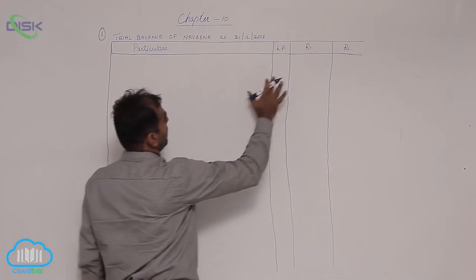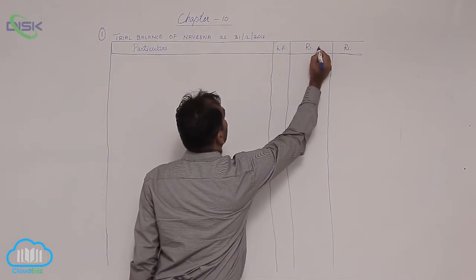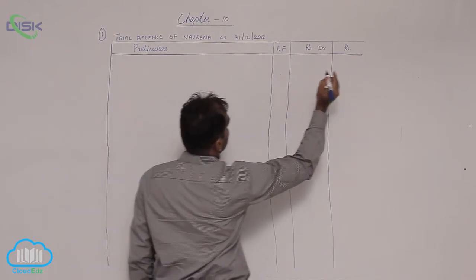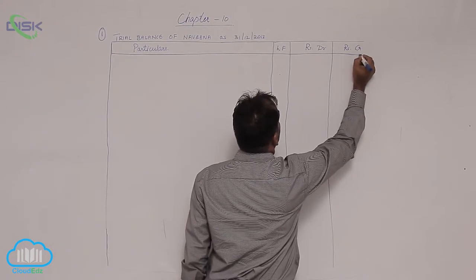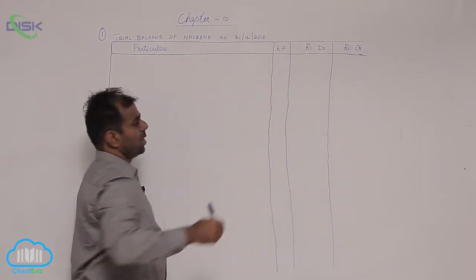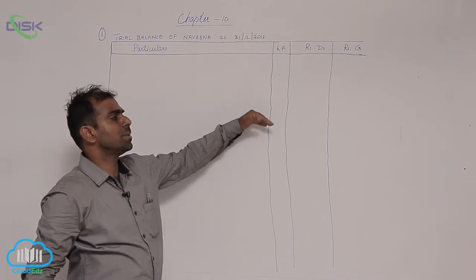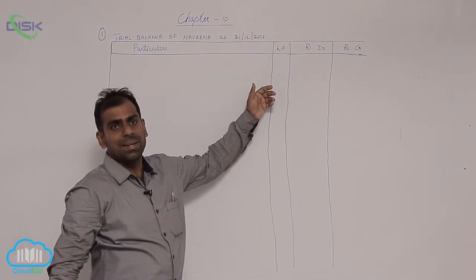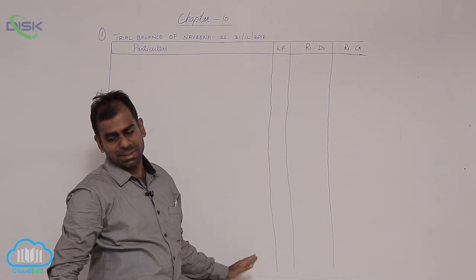So we have particulars, we have LF, and we have a column for debit balances and we have an amount column for credit balances. Although this LF will be used only when a number is given, otherwise we will not be using this column.